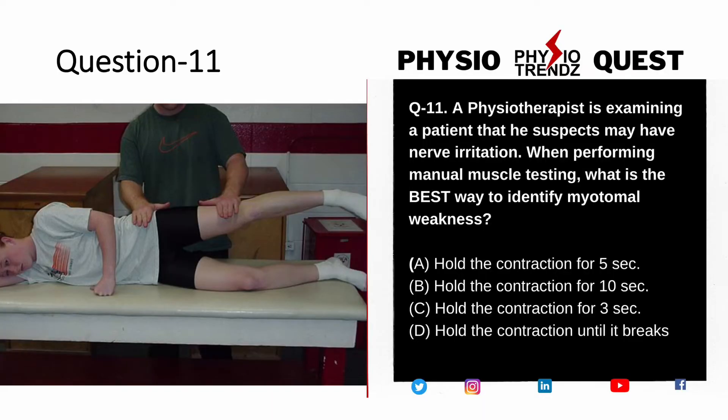Now for question number 11, which is about manual muscle testing. We all know MMT grades and why it is done. The key information sometimes missed is: for how much duration do you hold the contraction? The options given are 5 seconds, 10 seconds, 3 seconds, or until it breaks. The option 'until it breaks' is easily eliminated because continuously applying resistance risks injuring the musculature being contracted.